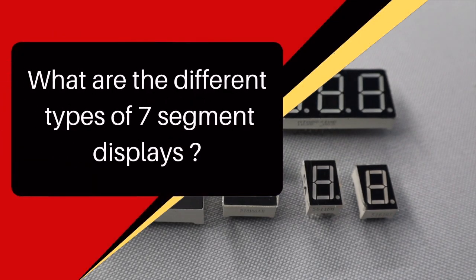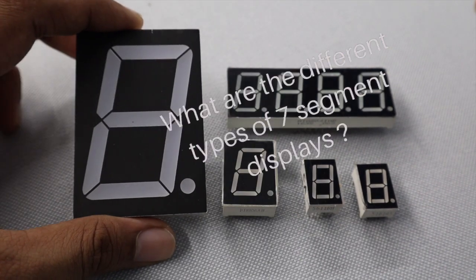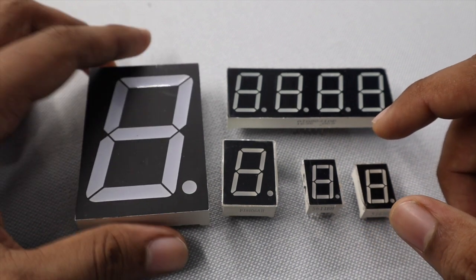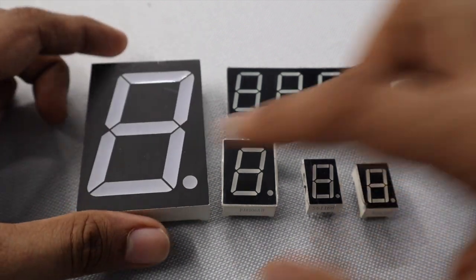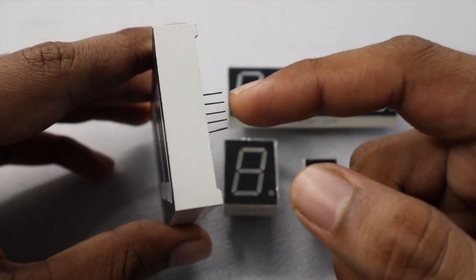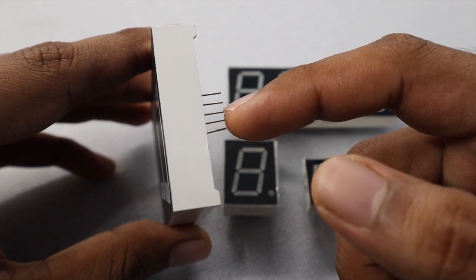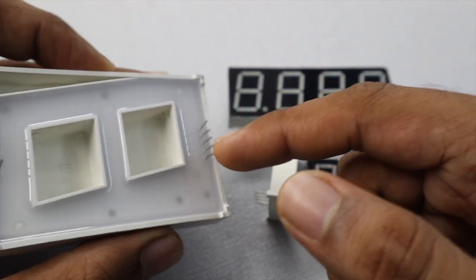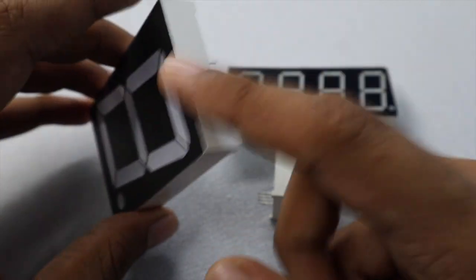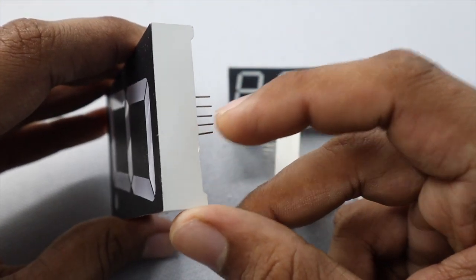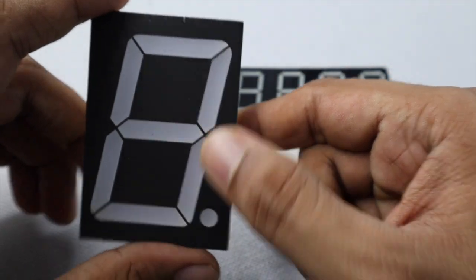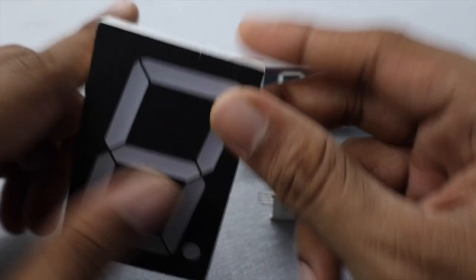Seven segment displays come in many different sizes and mainly two types: common anode and common cathode. All sizes are available in both types. The common pin is the third pin or middle one on both sides. In common cathode, the common pin goes to ground and all other pins go to positive. Each pin represents each segment.